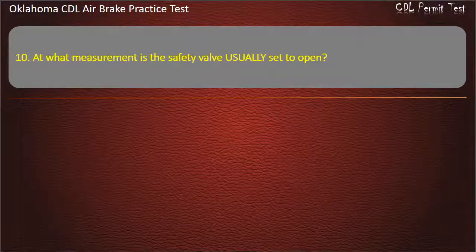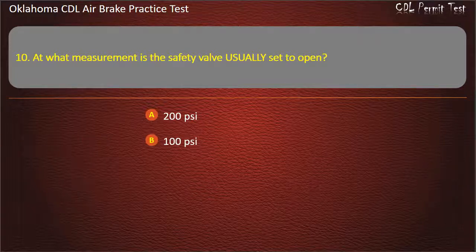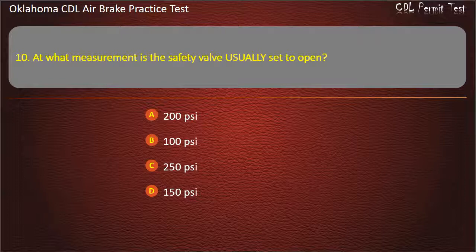Question 10. At what measurement is the safety valve usually set to open? 200 pounds per square inch; 100 pounds per square inch; 250 pounds per square inch; or 150 pounds per square inch. Answer: 150 pounds per square inch.